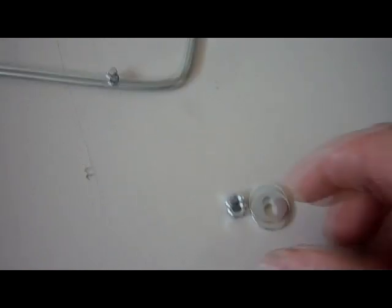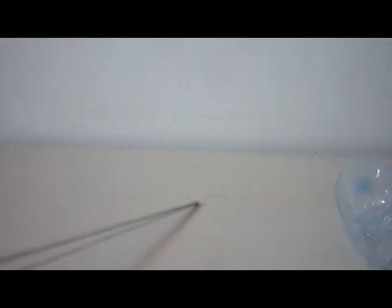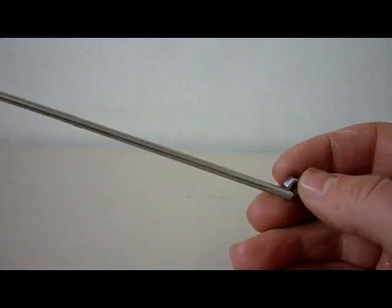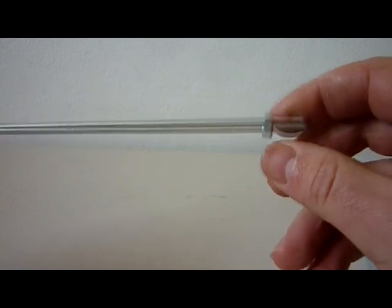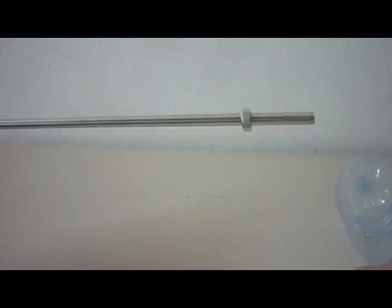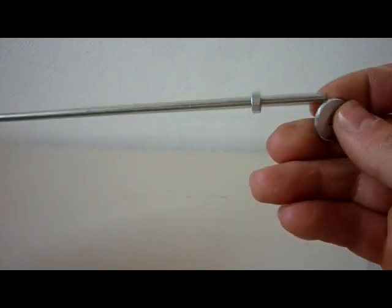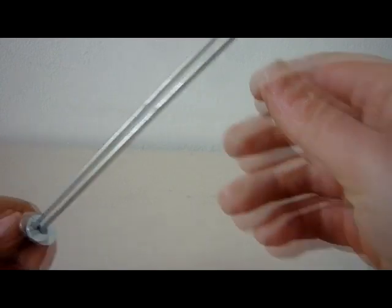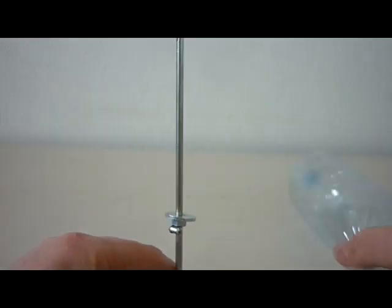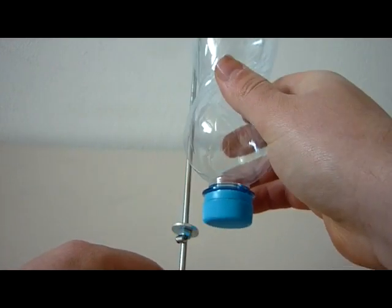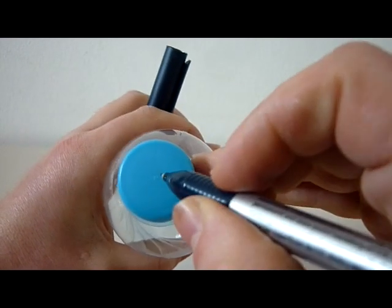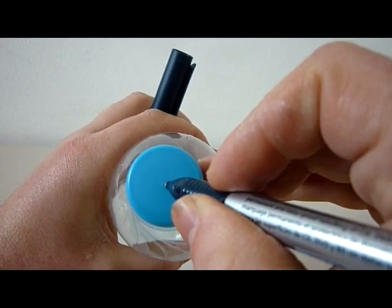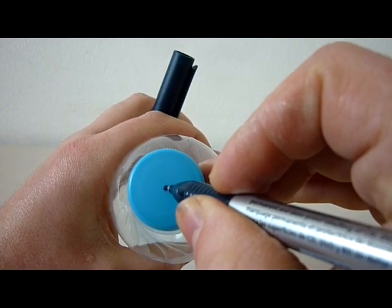After cutting I will put one nut and one washer to make sure that there is not too much friction. Now mark the center of the bottle from each side and drill it.